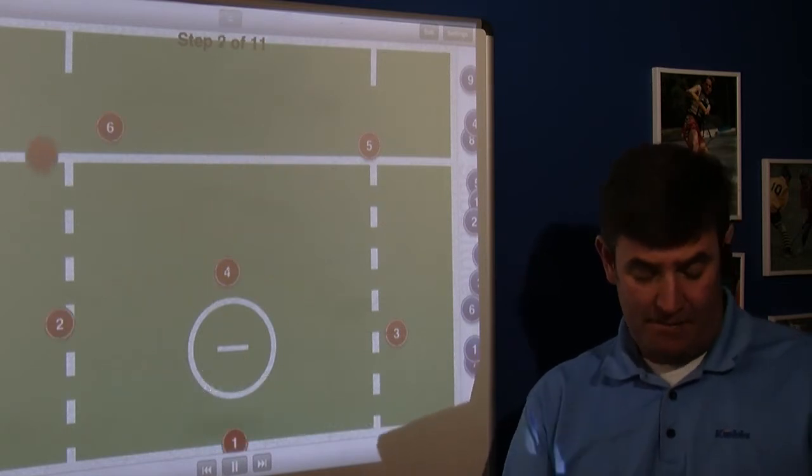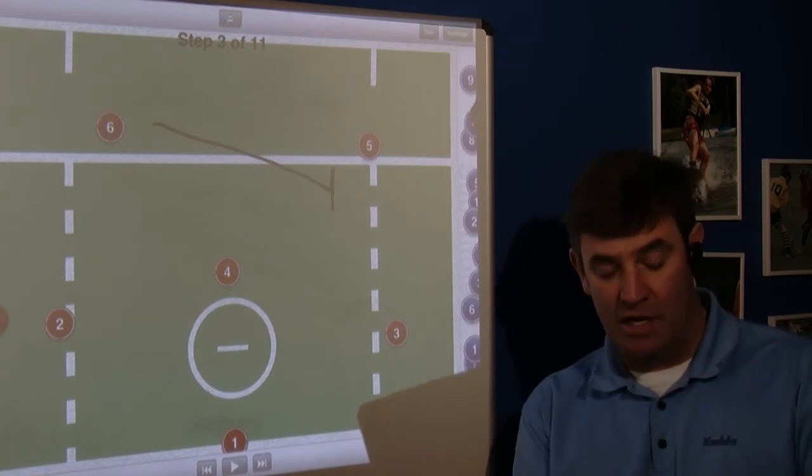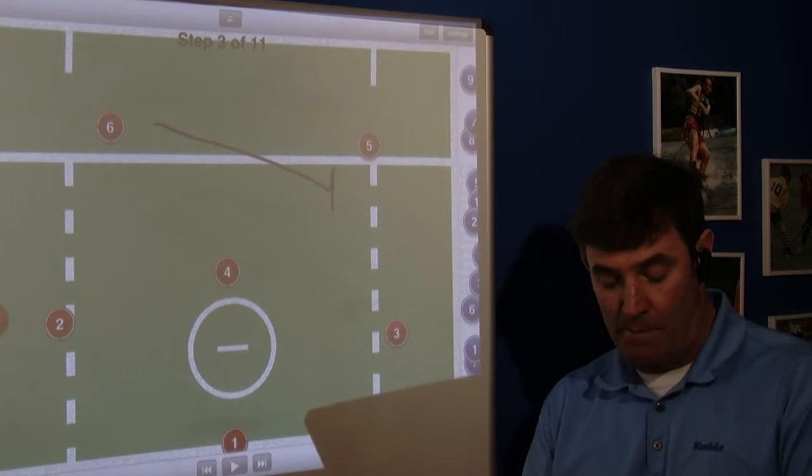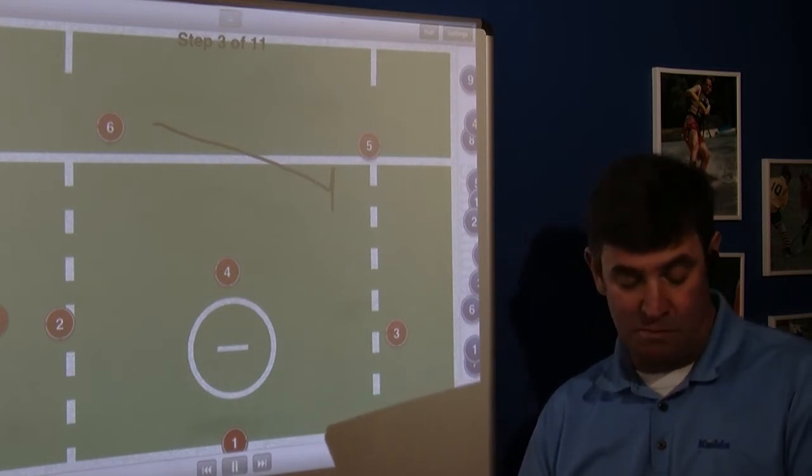You're going to see all the midfielders set up here. Number six gets the ball down the wing to number two and goes and picks for number five. Two is going to look to get the ball behind the goal to attackman number one. He's going to be your feeder in this play.